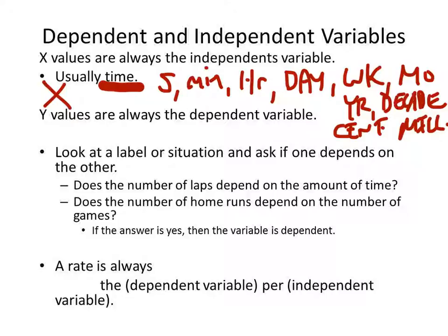Now, listen. This is an important part for you guys because you'll always see something like miles per hour. What this does is it tells you which one is X and which one is Y. The dependent variable is represented by Y.